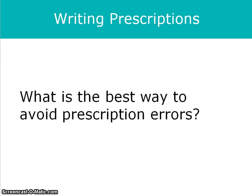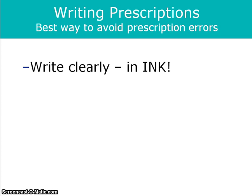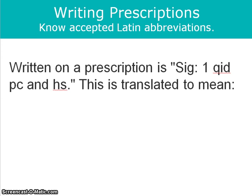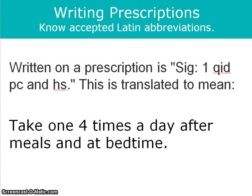What is the best way to avoid prescription errors? Write clearly in ink. You need to know the accepted Latin abbreviations. Written on a prescription, you see SIG, 1 QID, PC, and HS. What this translates to mean: take one four times a day after meals and at bedtime. Don't abbreviate English words, but do know the accepted Latin abbreviations.